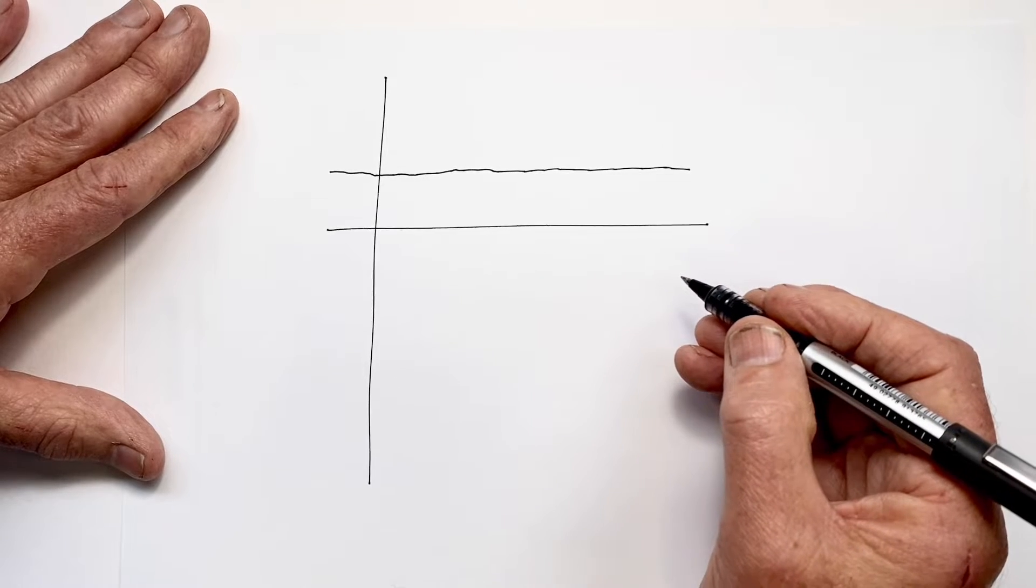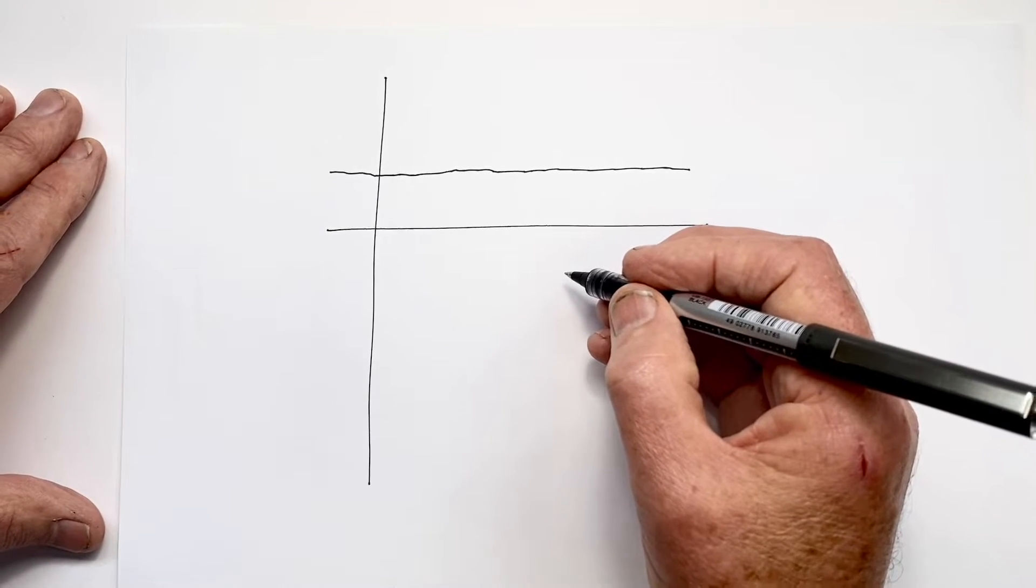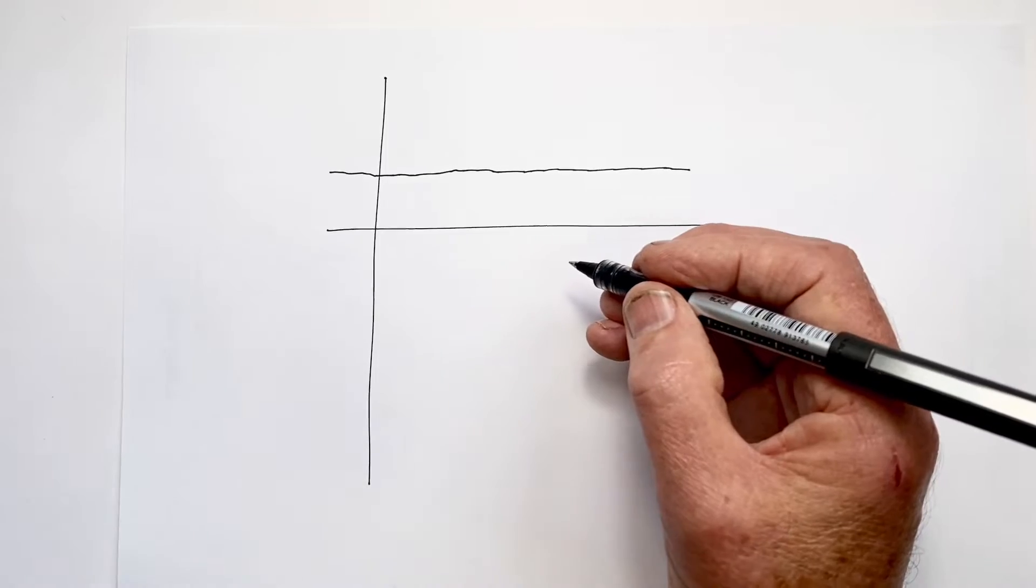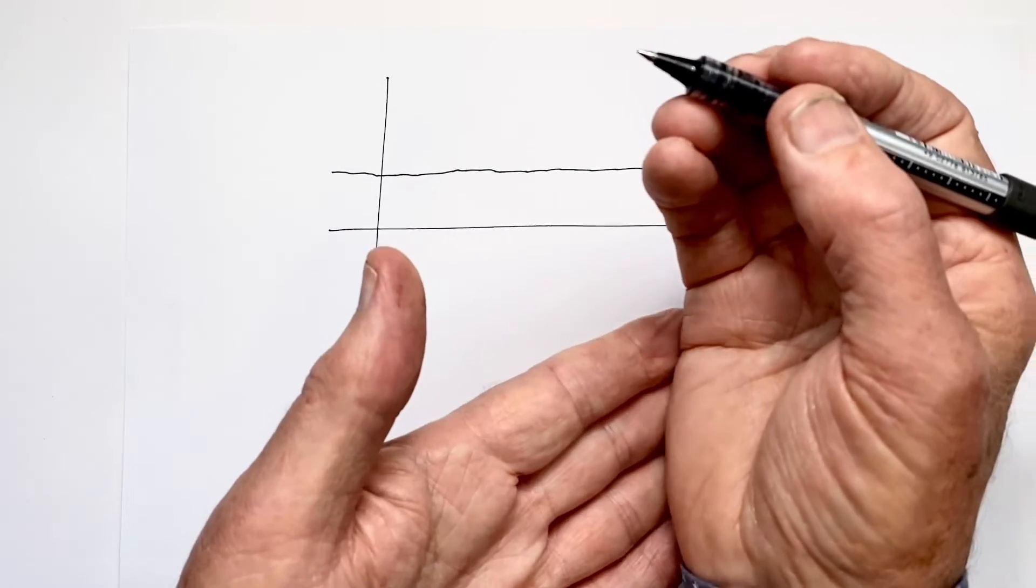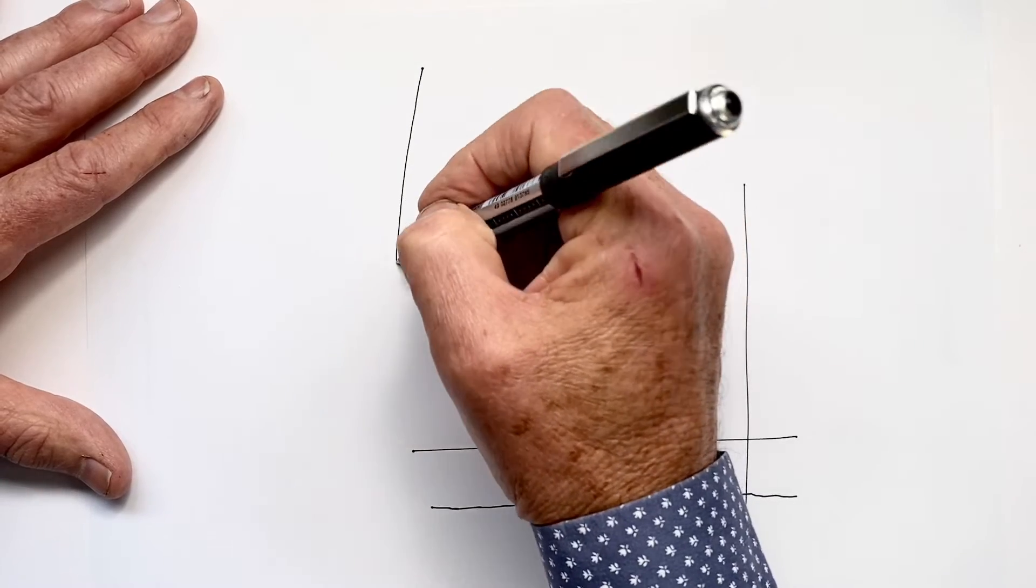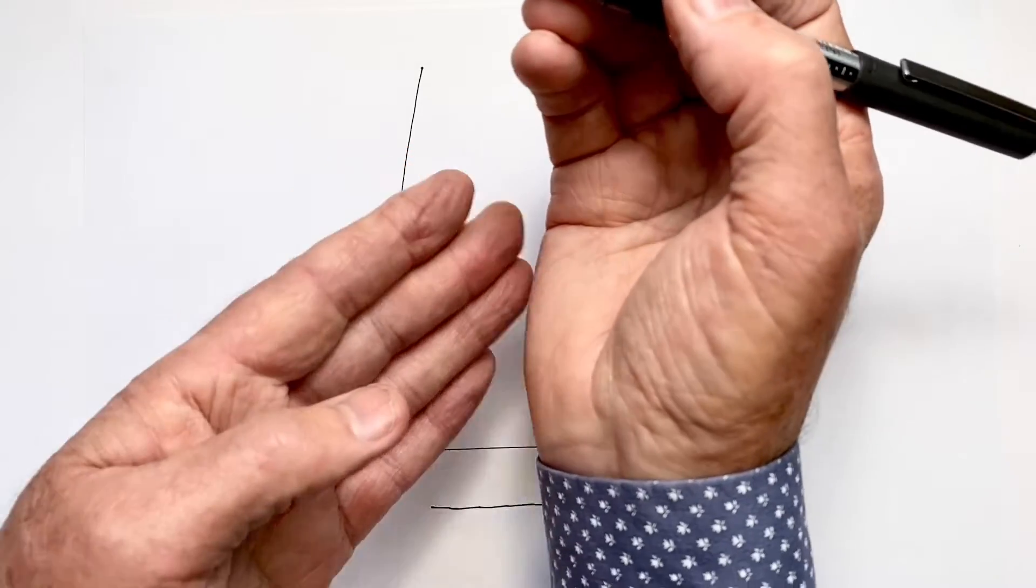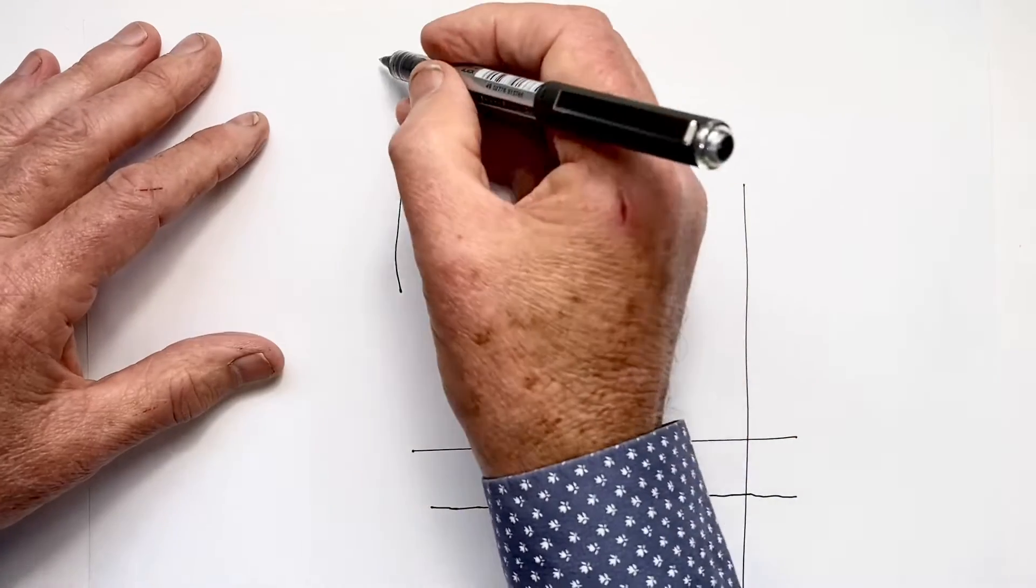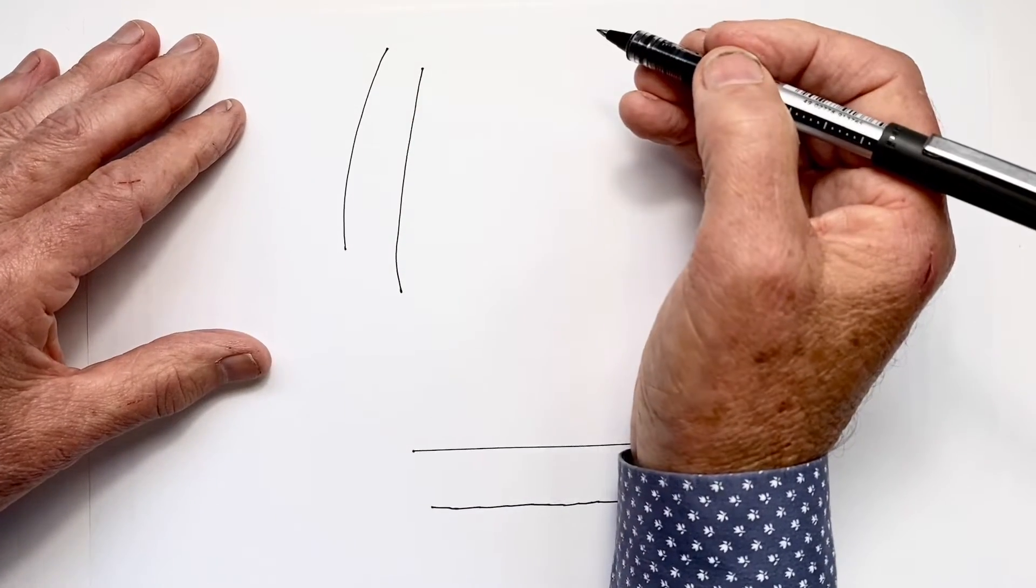Whichever direction we draw our line from, one of the ways to know that we're drawing from our fingers and not from our arm is that we can feel ourselves resting on the paper. What this causes is that as we draw a line, we tend to pivot on the point of contact with the paper. And pivoting will create a slightly curved line.